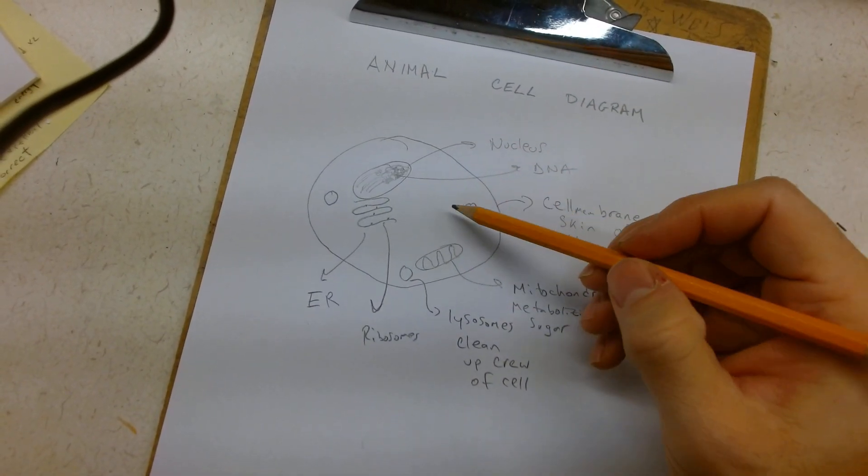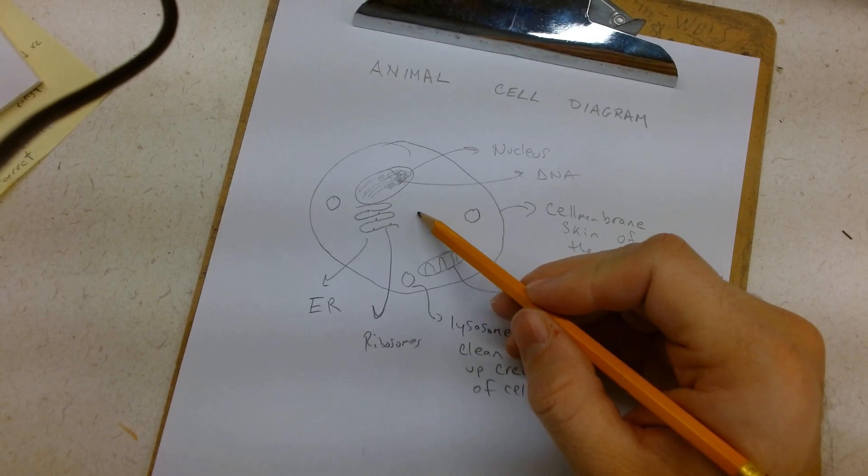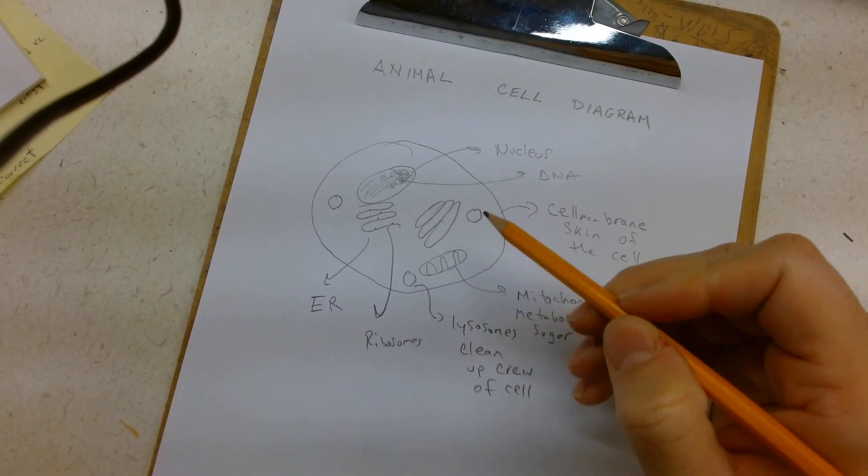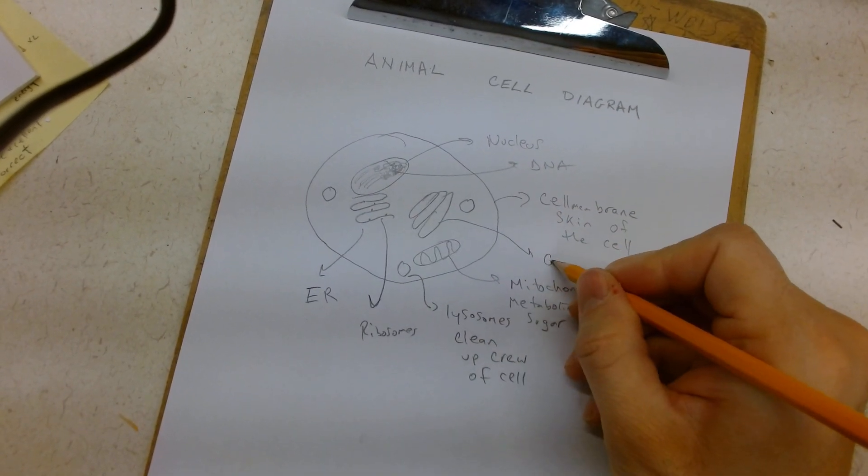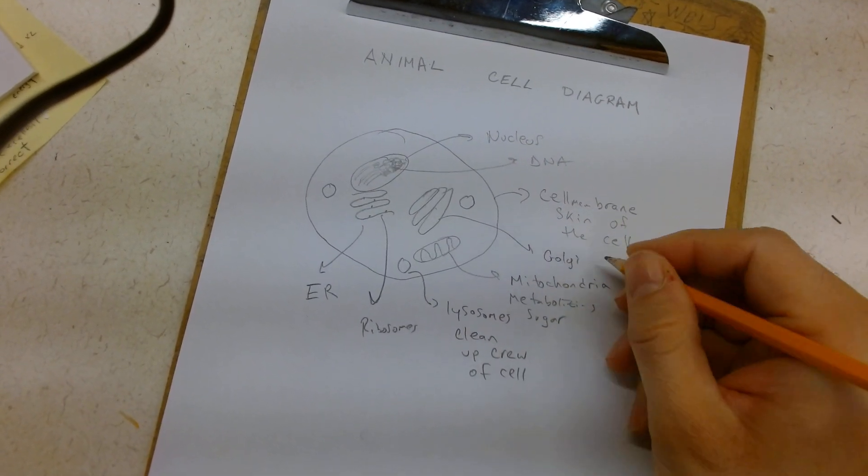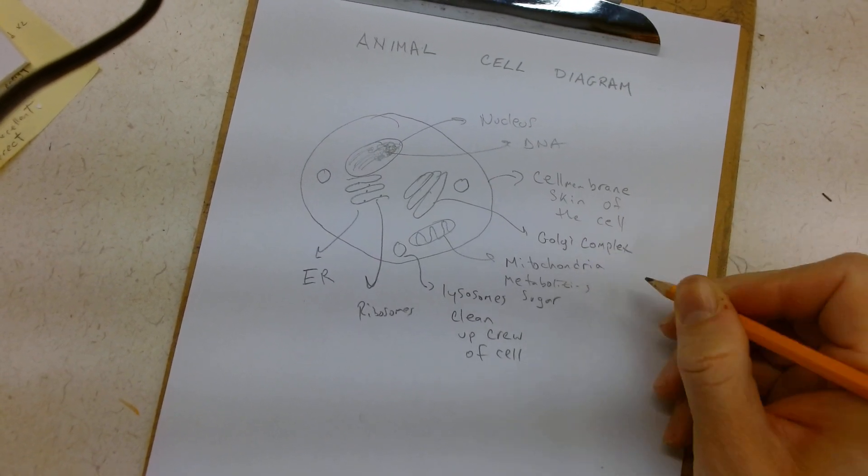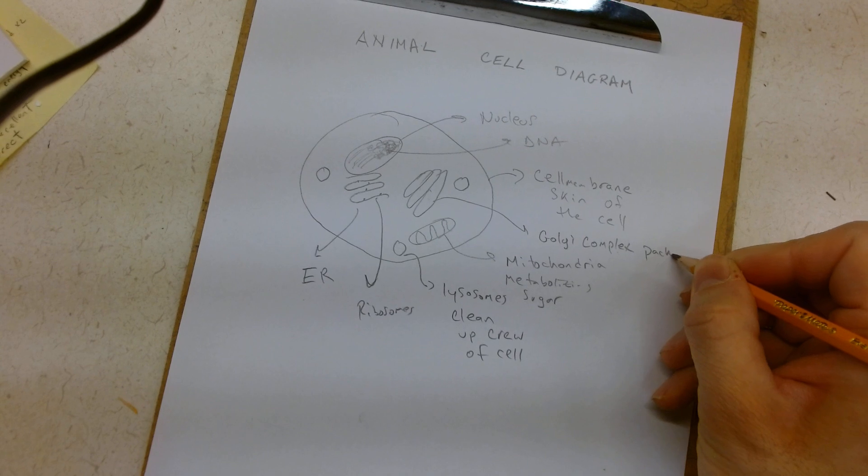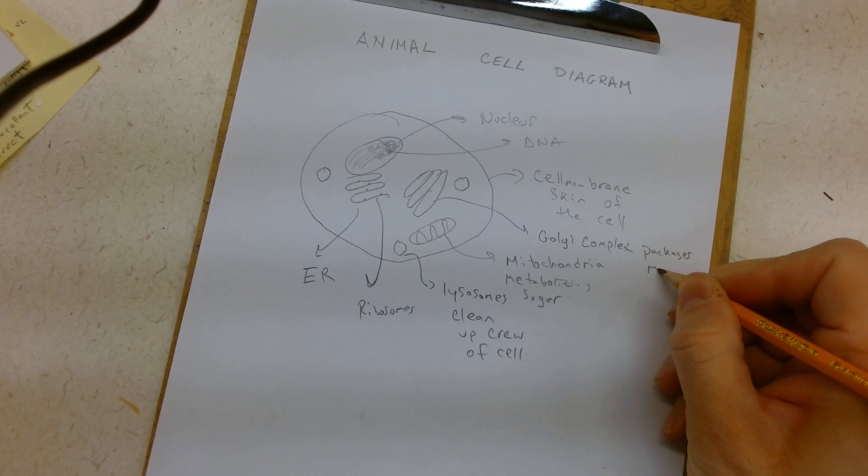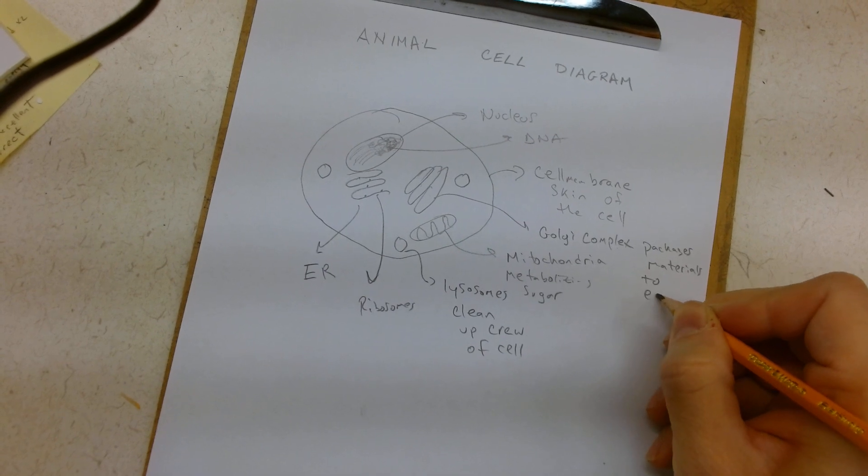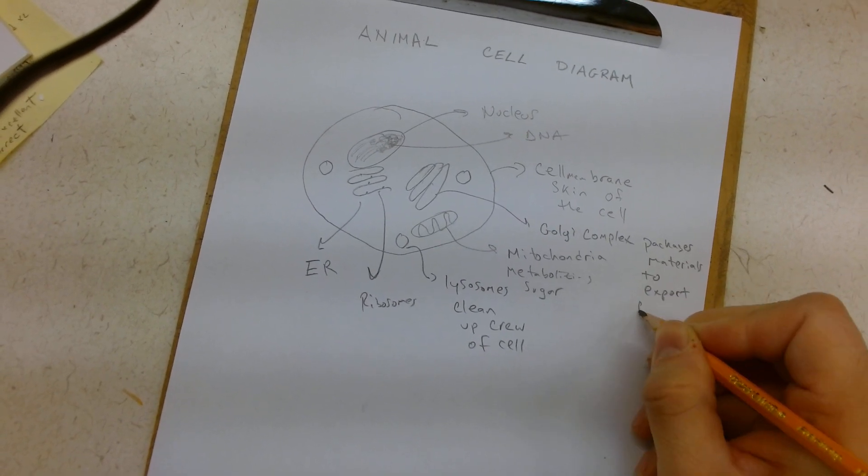And sometimes, things need to be made and shipped outside of the cell. This is why we have the Golgi body. You can think of it as the packaging company. The Golgi body, Golgi complex, packages materials to export from the cell.